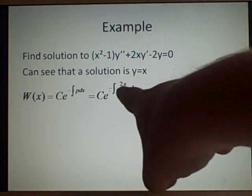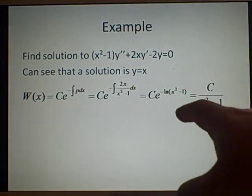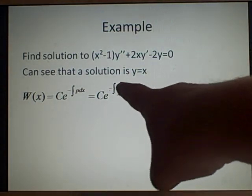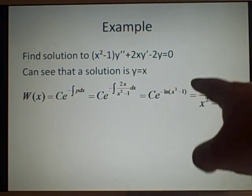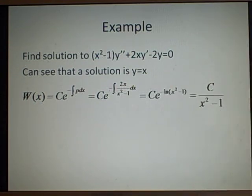So we can do the integral here. What I've done is this is the derivative of this, so we can find out it's a log, and we've got the minus, so that comes to the power, so it's c over x squared minus 1, because the logs cancel.